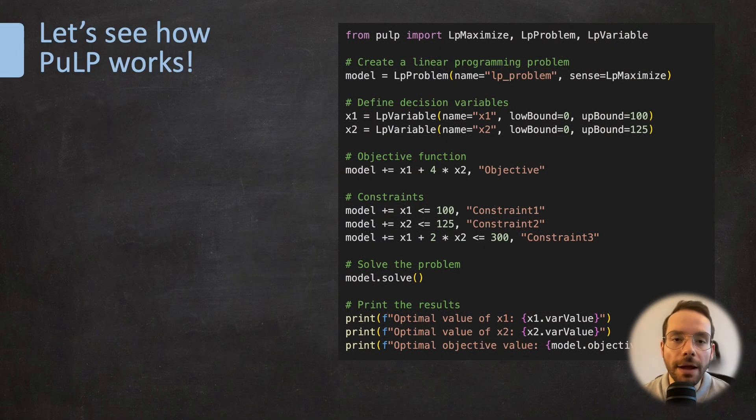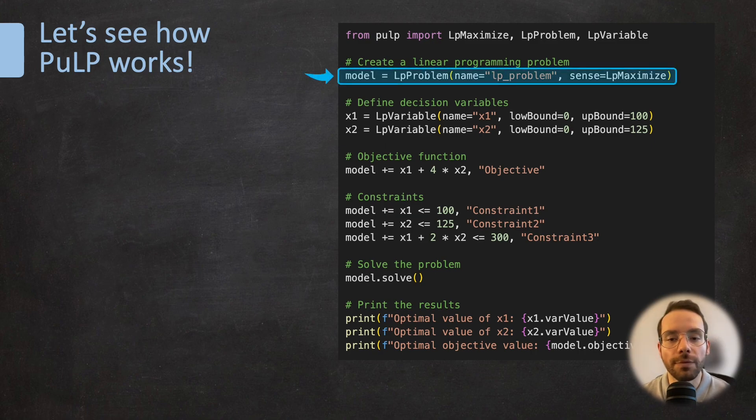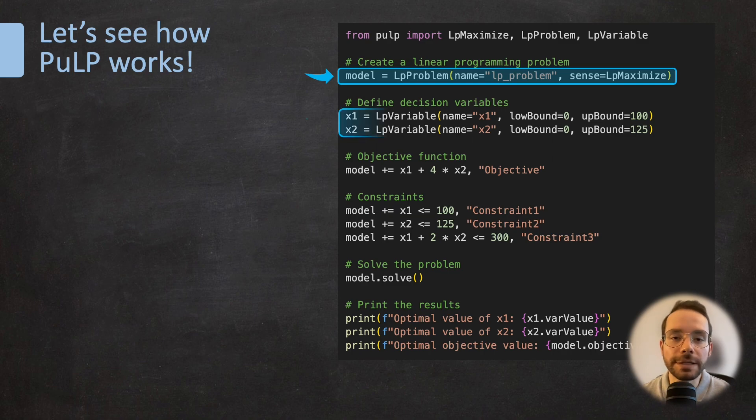Now let's see how we can solve a linear programming problem using the PuLP library in Python. After importing the PuLP package with this line of code here, we are going to define a linear programming problem object called lp_problem with the objective of maximizing it. And then these two lines of code here are going to define variables x1 and x2 with lower bounds of 0 and upper bounds of 100 and 125, respectively.